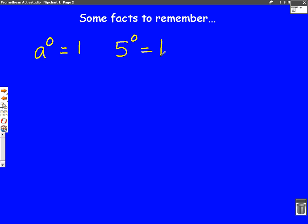Next, a to the power of one. a to the power of one is just a, it stays the same. Five to the power of one is just five because it stays the same. So anything to the power of one just stays what it was in the first place.